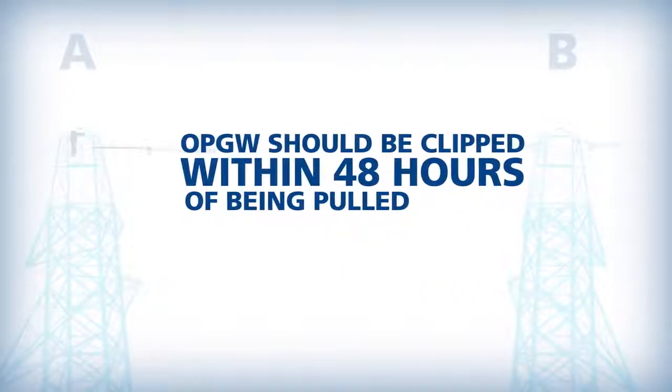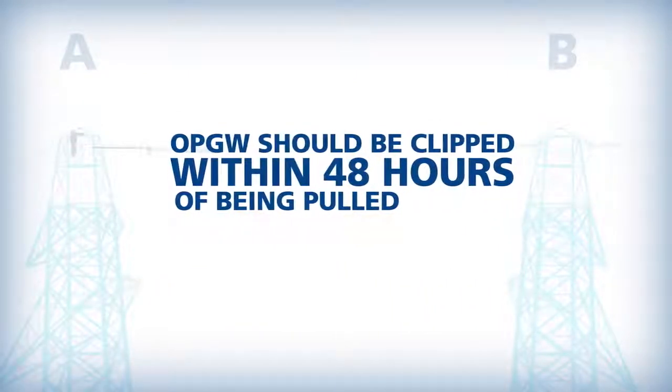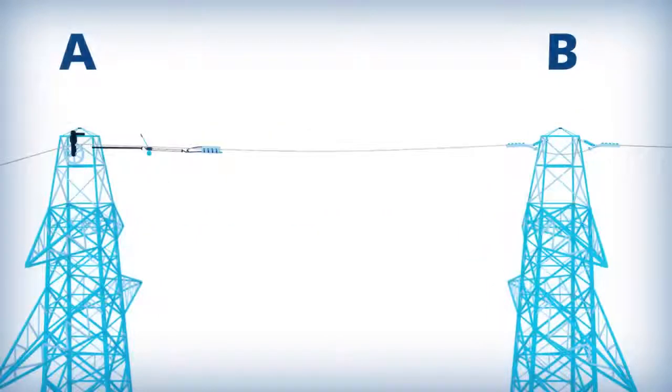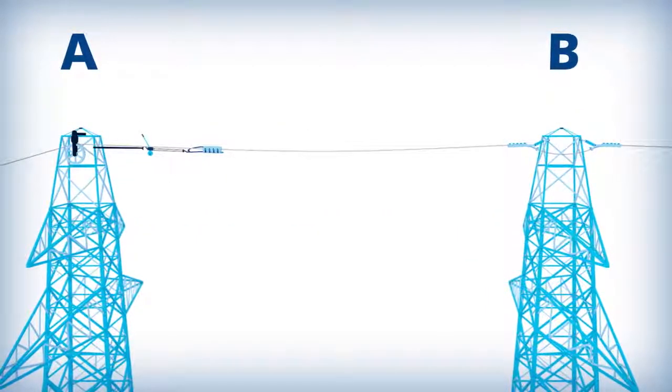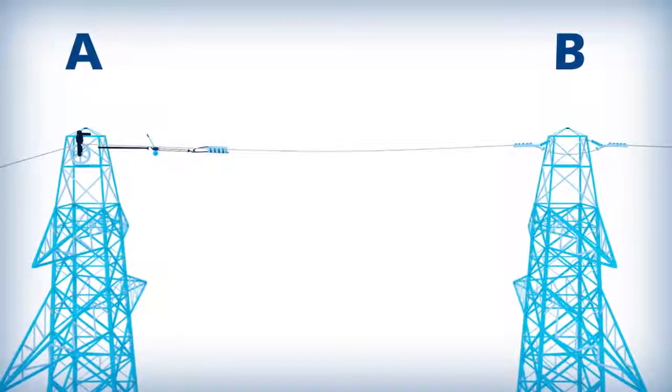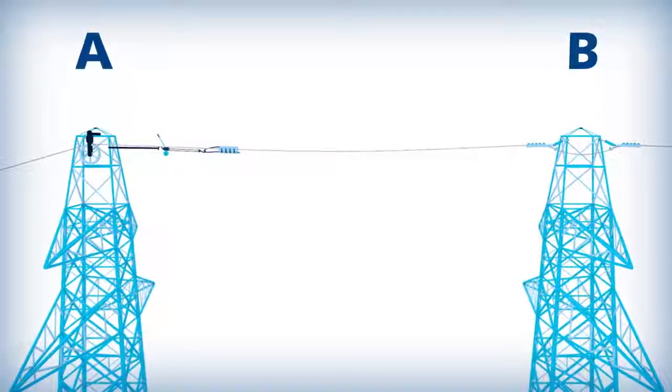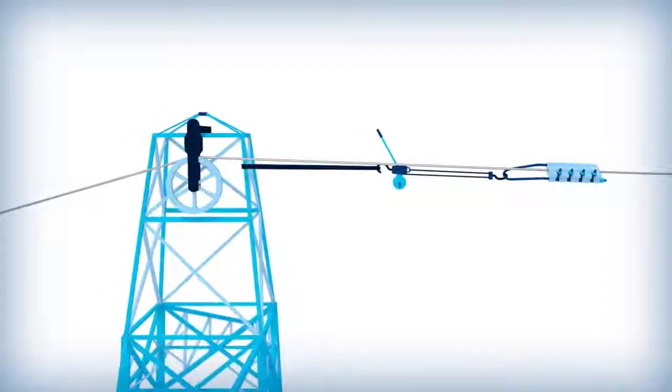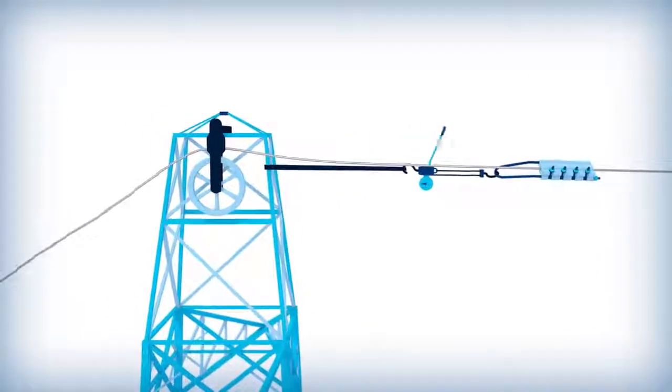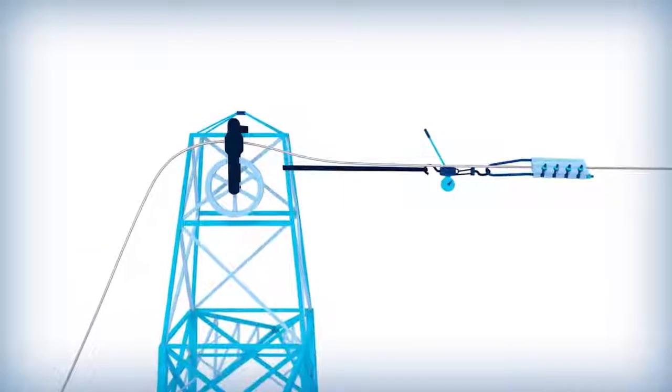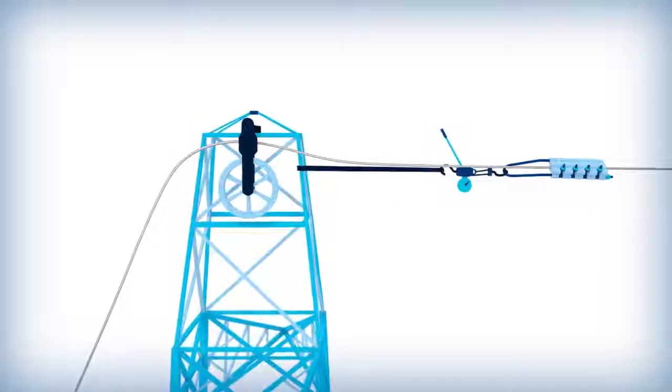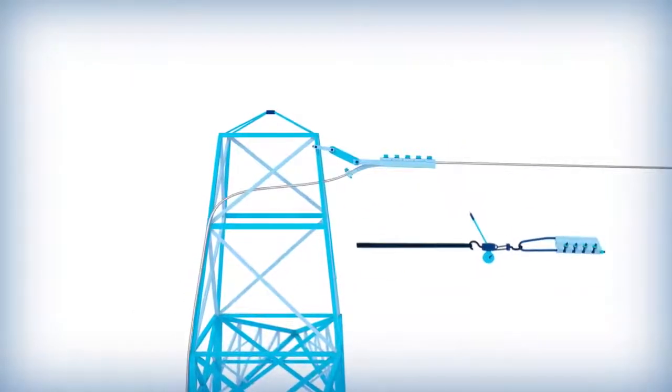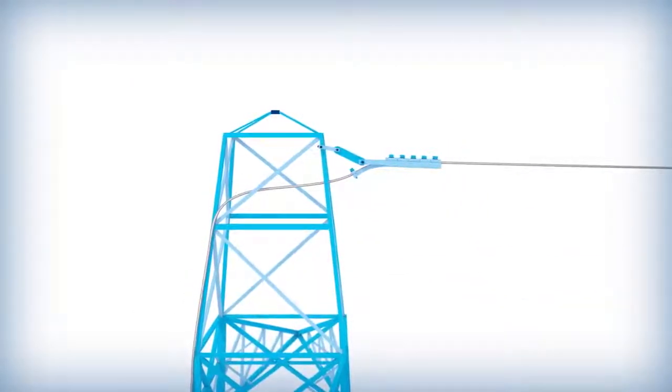OPGW should be clipped into dead ends and suspensions within 48 hours of being pulled. To lift the OPGW from the stringing block, attach come-alongs to the cable on each side of the structure and place a hoist on the structure arm. The hooks of the hoist are placed on the come-along and jacked up to pull the OPGW out of the stringing block. The stringing block can then be removed and a dead end can be placed to attach the OPGW to the structure.